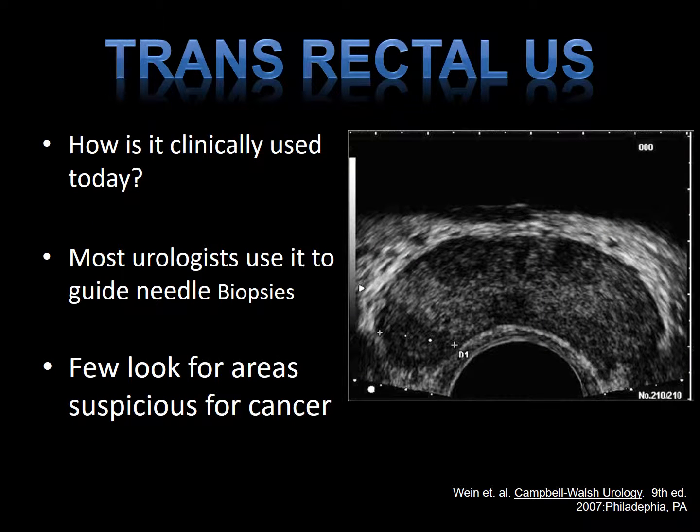Looking at transrectal ultrasound — how is it typically used? Well, traditionally we use it to place the needle within certain regions of the prostate to sample adequately, spreading the needle around.